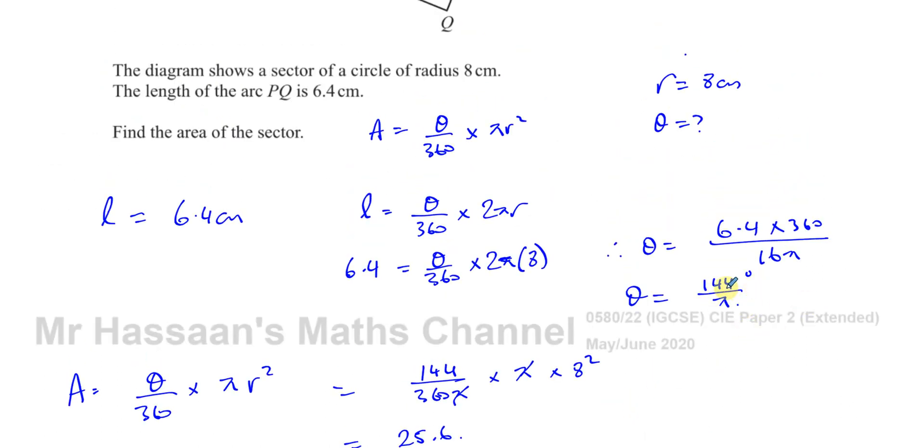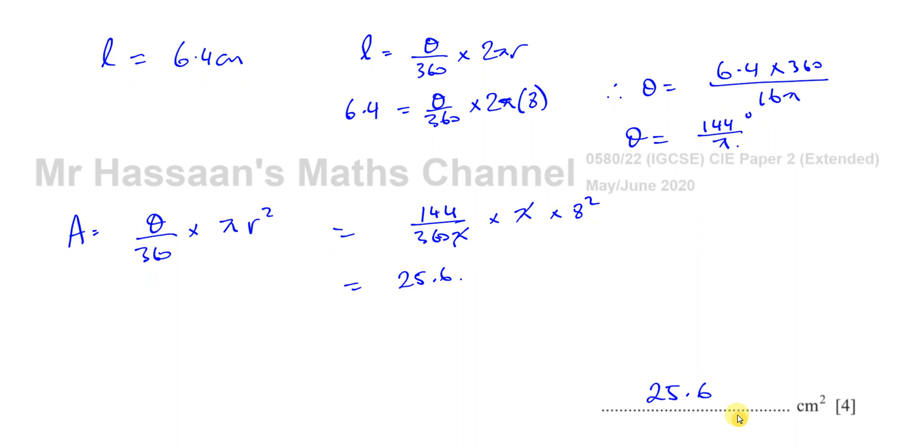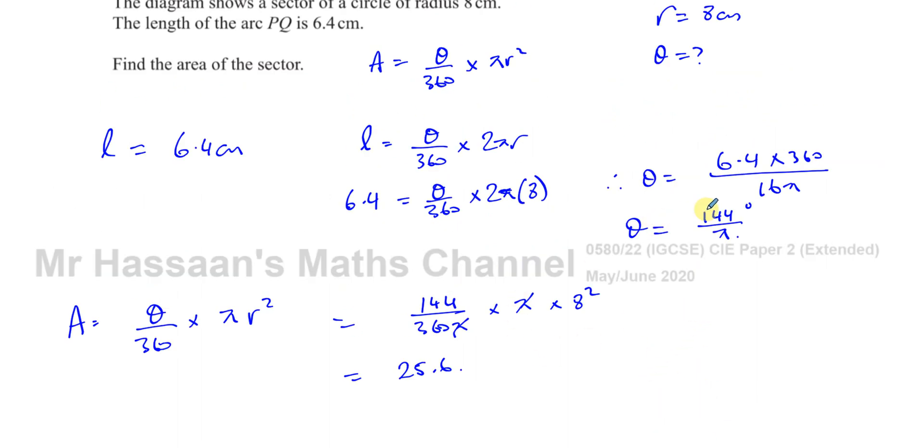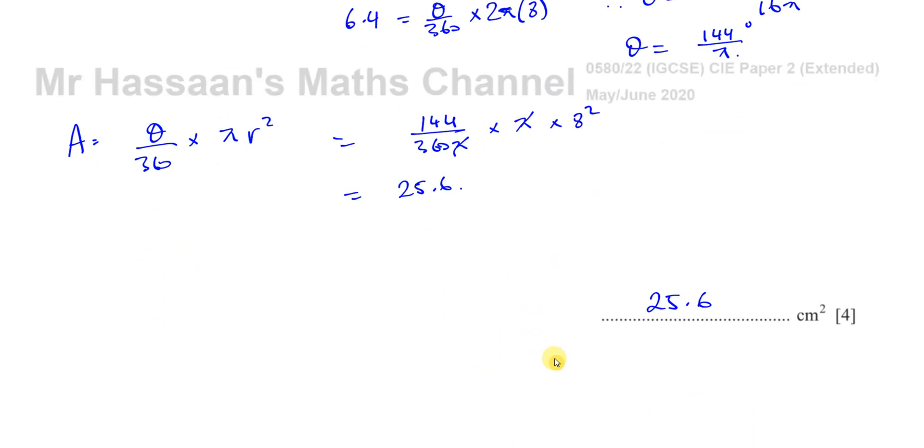So you've got 25.6 centimeters squared is the area of that sector. I could have rounded this to 3 significant figures. Then my answer wouldn't be as exact as it is here. So leaving it in terms of pi is always a good idea if it's not the final answer. Okay, once you go to the final answer, I used the pi. They actually canceled it out, so it made life a bit easier.